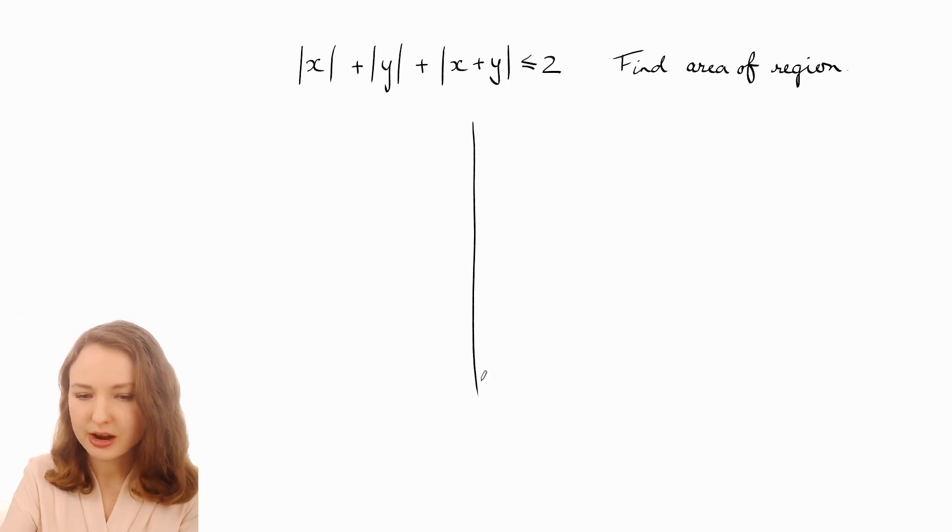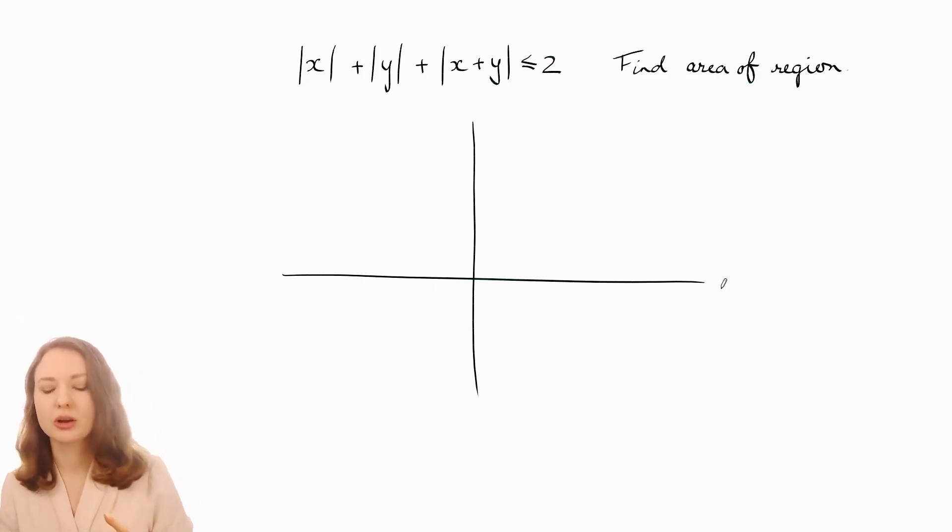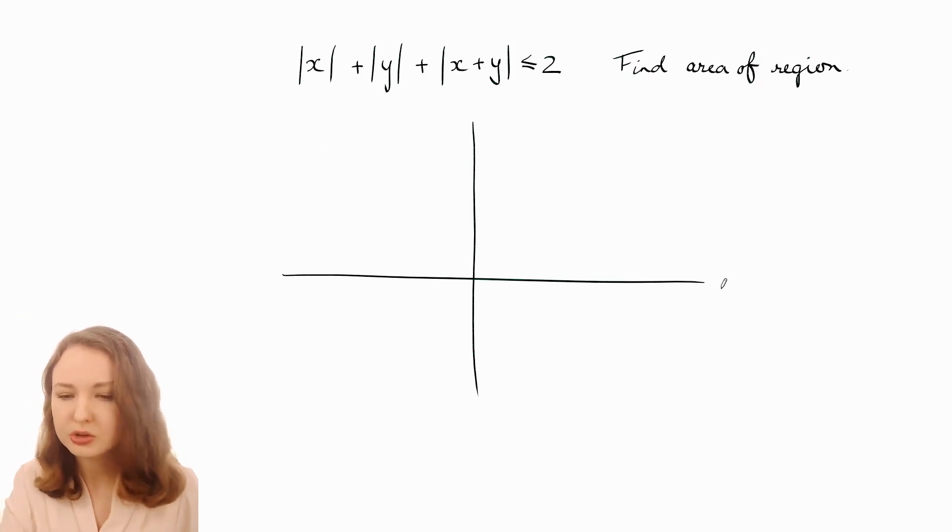So we need to graph this inequality. The idea with absolute values is that you want to consider one region where you know whether x and y are positive or not, and x+y if that's negative or positive, because then you can rewrite the equation without the absolute values. For example, we could concentrate on the section where both x and y are positive, so up here, and then x+y is going to be positive as well. In this region, the absolute value of x is just going to be equal to x, and that's just going to be equal to y, and that's just going to be equal to x+y.